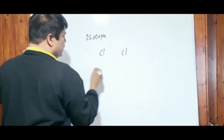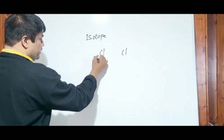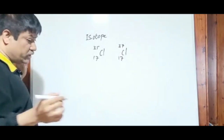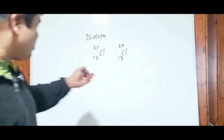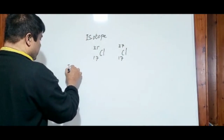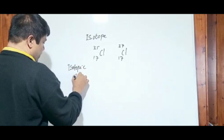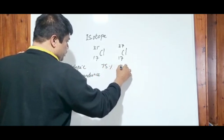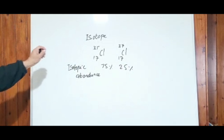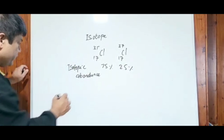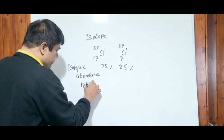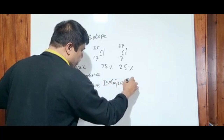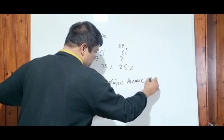Let's take the example of chlorine. We have two isotopes: Cl-35 (₁₇³⁵) and Cl-37 (₁₇³⁷). I already taught you about natural abundance — the isotopic abundance. One is 75% and the other is 25%. From this we can work out the relative isotopic atomic mass.